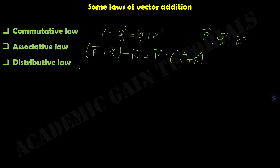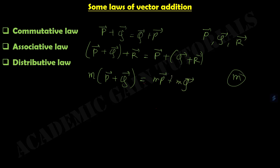Coming to the third law, which is distributive law. Suppose M is a scalar quantity. Then M into (P plus Q) can also be written as M into vector P plus M into vector Q. This is known as distributive law. I hope we understand these three laws of vector addition: commutative law, associative law, and distributive law. In our next lecture, we will discuss resolution of vector and components.